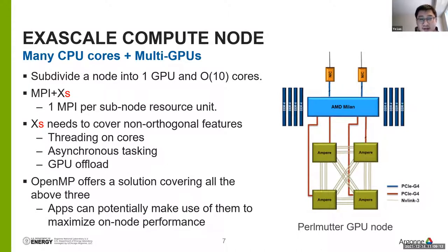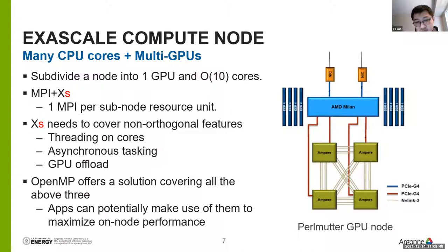If you divide the node by GPU, you end up with a subnode architecture with one GPU and about 10 to 20 cores. Within this subnode structure you continue with the familiar MPI+X programming model — but I add an 'S' because to program this subnode you might need multiple programming schemes for parallelism. You have quite a few cores and potentially need threading to fully utilize them, a GPU requiring asynchronous computing, and heavy compute workloads to dispatch to the GPU. These features are not orthogonal — they need to work together to make best use of the compute capability.